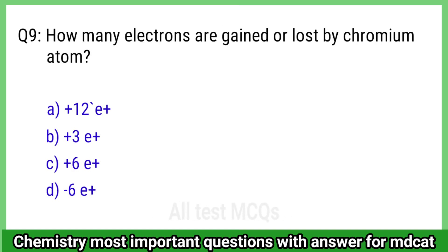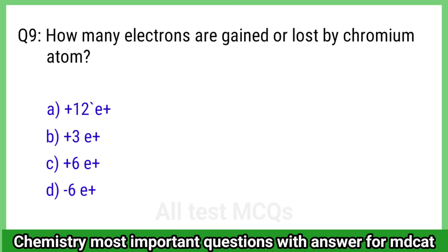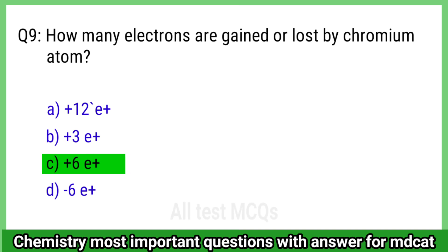Question 9: How many electrons are gained or lost by a chromium atom? The right answer is option C, plus 6 electrons.